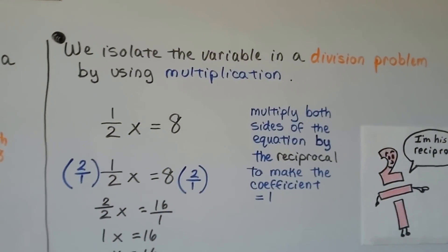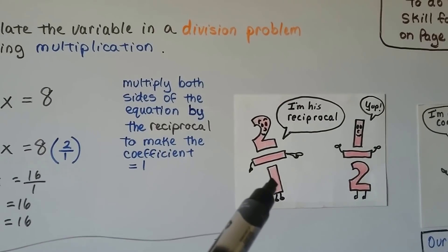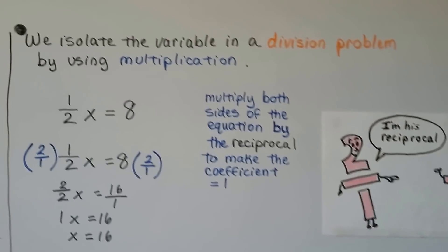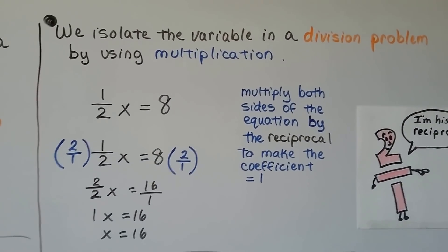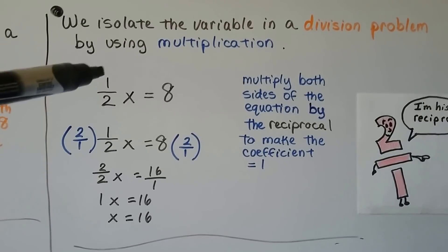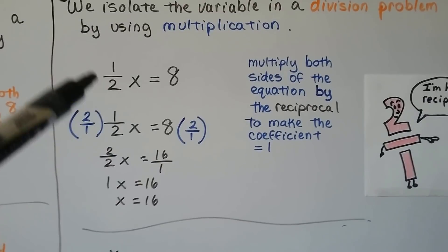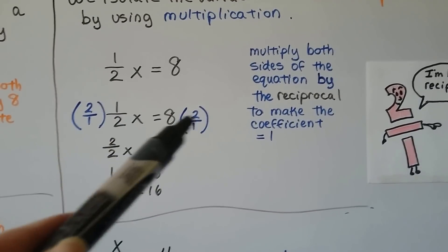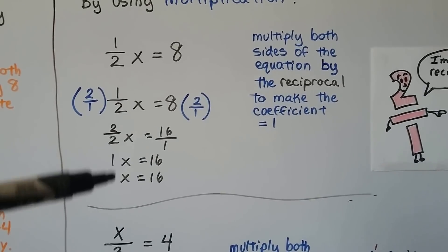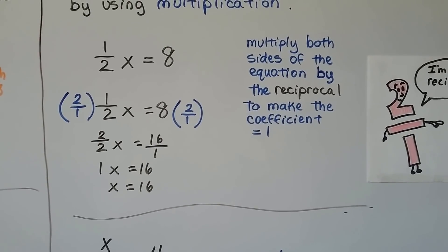We isolate the variable in a division problem by using multiplication. When you see a fraction like one half, the reciprocal is the upside-down version — numerator and denominator swap. We multiply by the reciprocal to isolate the variable. So for one half x equals 8, we flip it to 2 over 1 and multiply both sides. That gives us 2 over 2, which is 1, so we just have x. 8 times 2 is 16, so x equals 16.